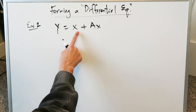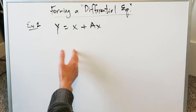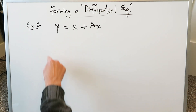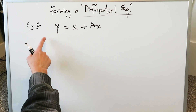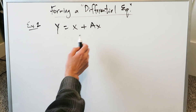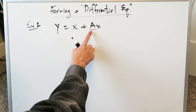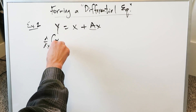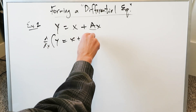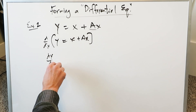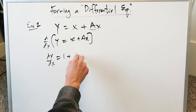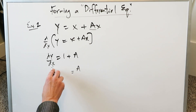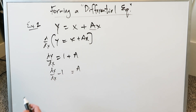Example number 2: y equals x plus ax. We have an expression here. When looking at an expression for forming a differential equation, the first thing in your mind should be: how many constants do I see? The number of constants will be the number of derivative steps you take. I have one constant, so I take one single derivative. Doing the derivative of the entire expression gives dy/dx equals 1 plus a.